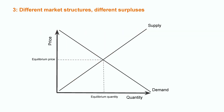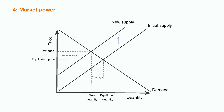Let's analyze the supply and demand model with market power. For the standard supply and demand model, there is perfect competition. When a firm gains market power — for instance, when a market transforms from a monopolistic competition into an oligopoly — it can increase its prices and decrease the quantity it produces. The supply curve will move up.